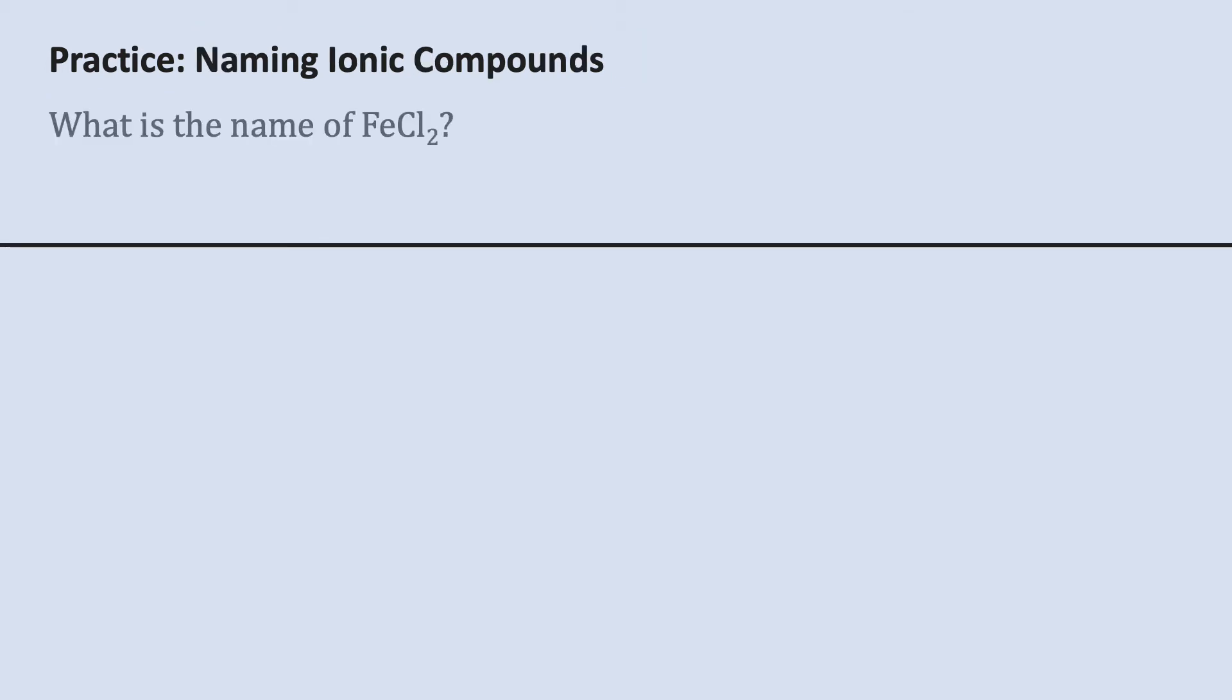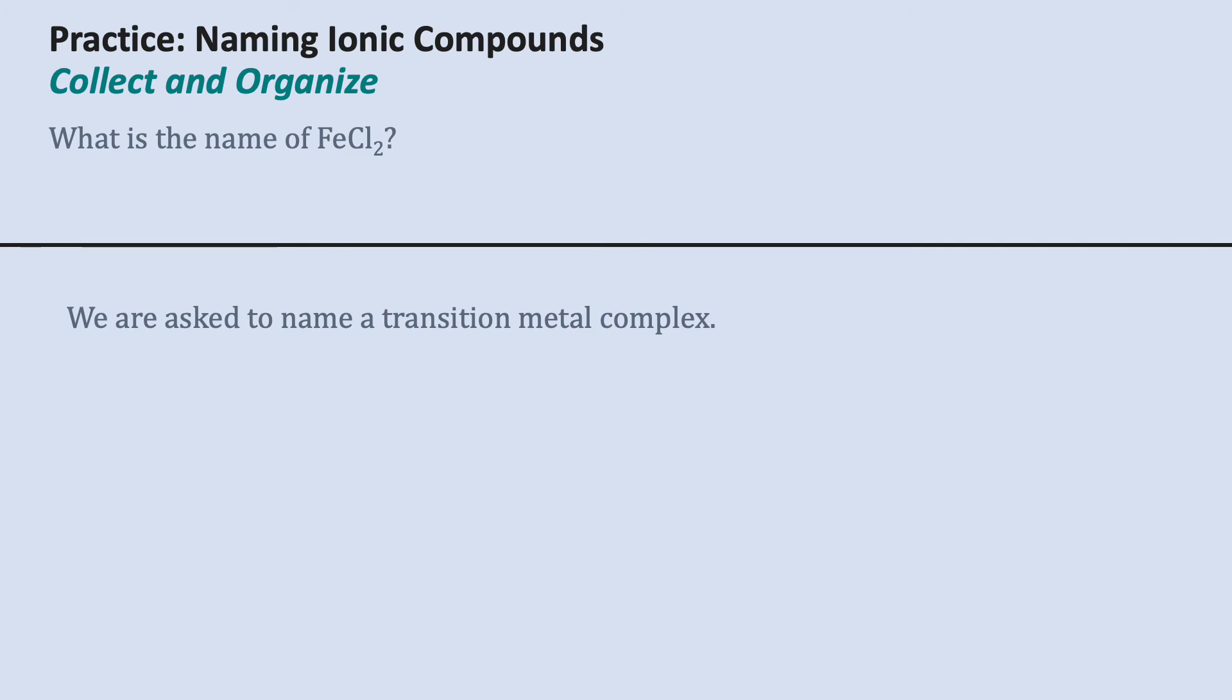This time, we're going to practice naming ionic compounds, and the compound we have to name is FeCl2. This is a transition metal complex, which I know because Fe is in the transition metal section of the periodic table.